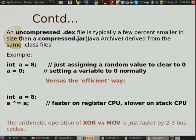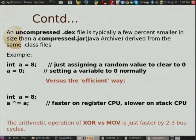The arithmetic operation of XOR versus move is faster — maybe 2 or 3 bus cycles, though it is not confirmed exactly because we do not know the exact hardware cycling. It could be 1, 2, or 3, but register-based architectures are much faster than stack-based.